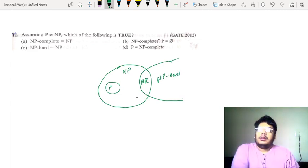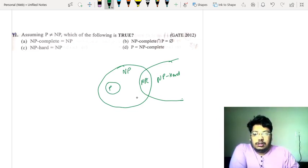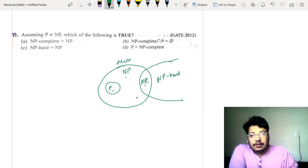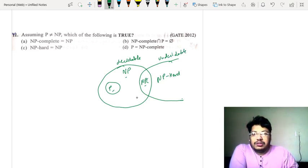So now this portion - the whole NP inclusive of NP-complete and P - is called decidable, and this concept of NP-hard is undecidable. So this diagram you must remember, so that in the future this diagram will help you out in many questions.